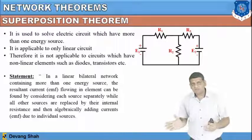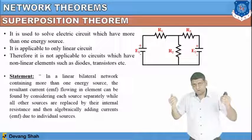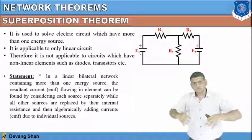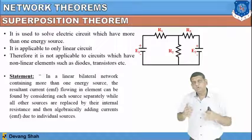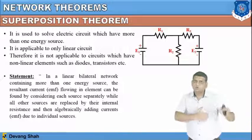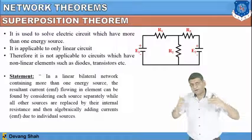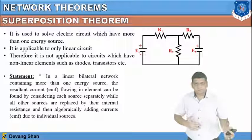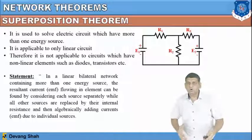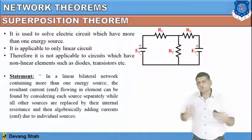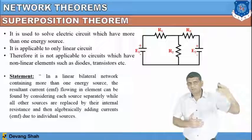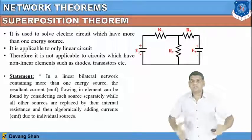In this network there are two voltage sources, E1 and E2, and we want to find the current passing through resistance R2 or voltage drop across R2. We must consider the effects of both E1 and E2 on R2. You cannot take two voltage sources together simultaneously. So first take the effect of E1 and calculate it, then take the effect of E2 and calculate it. Finally, algebraically add or subtract these two effects. At a time only one source is considered — that is the principle of superposition.